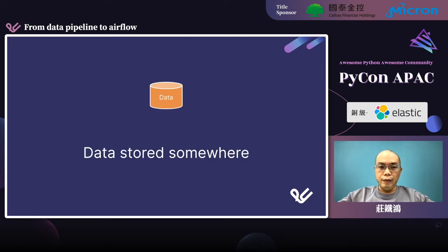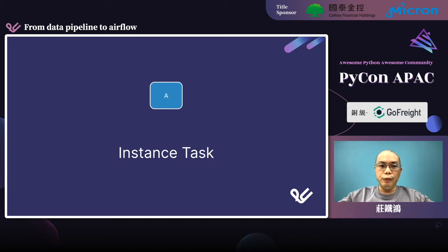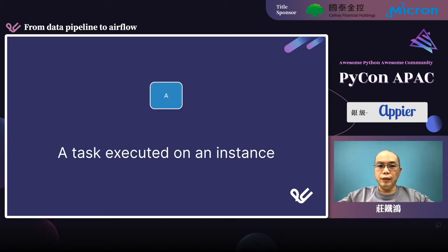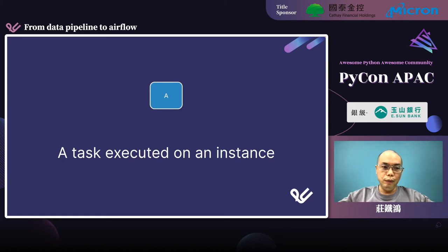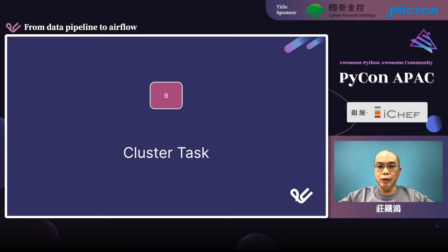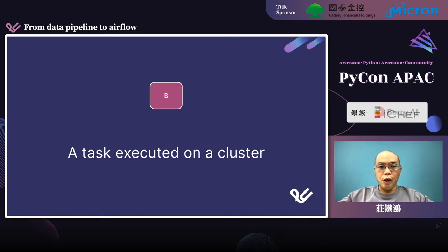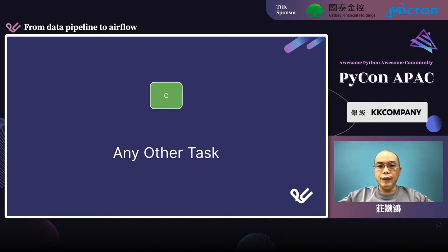An orange can represents some data stored somewhere. In our implementation, it is Amazon Simple Storage Service, or DynamoDB. A blue rounded rectangle represents an instance task — a task which is executed on a single machine. In our implementation, this kind of task is executed on Amazon Elastic Compute Cloud, aka EC2. A purple rounded rectangle represents a cluster task — a task which is executed on a cluster. In our implementation, this kind of task is processed with PySpark on Amazon EMR. A green rounded rectangle represents any other kind of task — neither an instance task nor a cluster task.